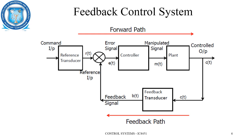In the feedback path, a transducer converts the output into an electrical signal. In the comparator, two electrical signals are compared — the signals must be of a similar type for comparison. So transducers are used: a reference transducer at the input side and a feedback transducer in the feedback element. R(t) and the feedback signal P(t) are compared — it may be summation or subtraction — generating an error signal E(t). This E(t) is fed to the controller, which creates the manipulated signal M(t). Finally, M(t), when fed to the plant, creates the controlled variable C(t).